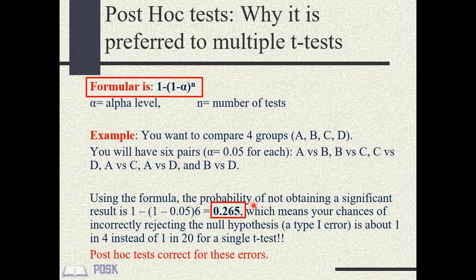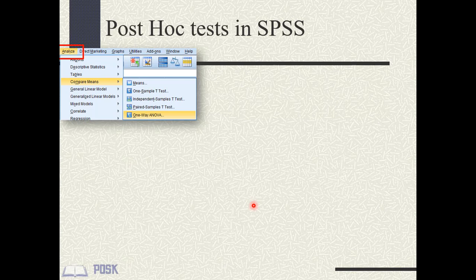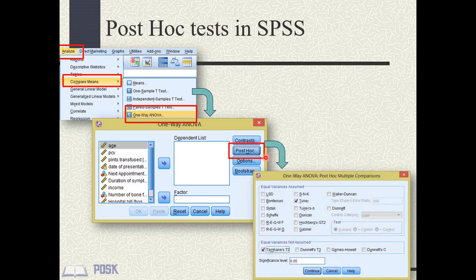To do a post-hoc test, open the ANOVA dialog box by clicking Analyze, then Compare Means, then One-Way ANOVA. In the ANOVA dialog box, click the button labeled Post Hoc to bring up the post-hoc tests dialog. There are many types of post-hoc tests; Tukey and Bonferroni are among the most popular. SPSS provides close to 15 different post-hoc tests, but Tukey and Tamhane's T2 are among the most popular.